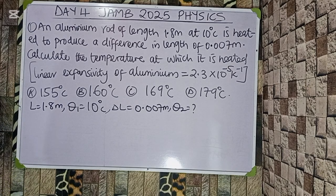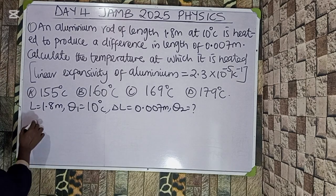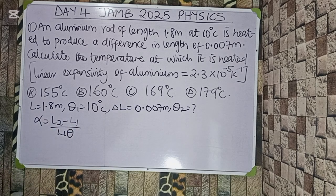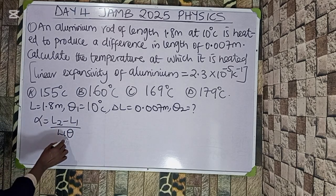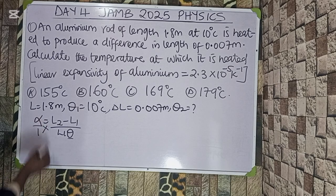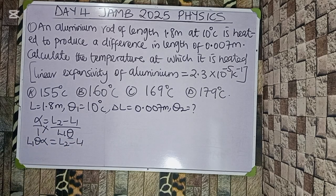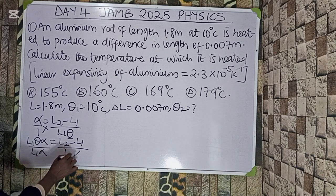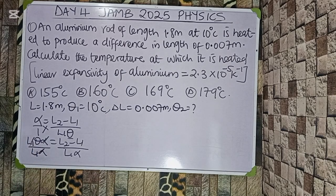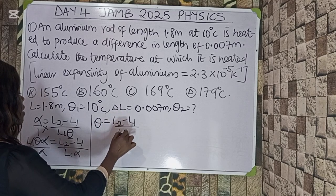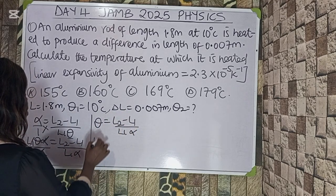Using the formula: α = (L₂ − L₁) / (L₁ × θ). Cross-multiplying gives L₁ × α × θ = L₂ − L₁. Dividing both sides by L₁ × α, we get θ = (L₂ − L₁) / (L₁ × α). Let's substitute to see what we have. The difference in length is 0.007, divided by L₁ = 1.8, multiplied by α = 2.3 × 10⁻⁵.